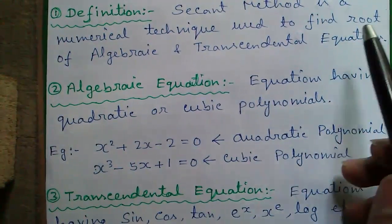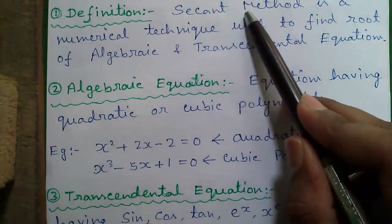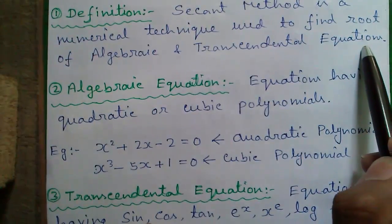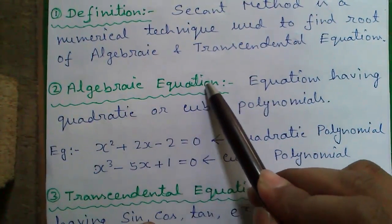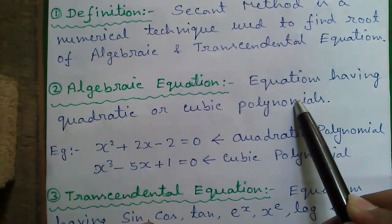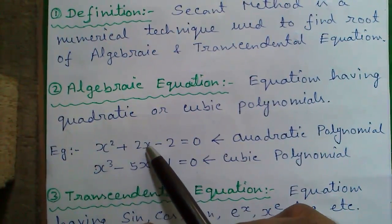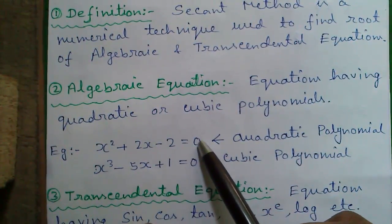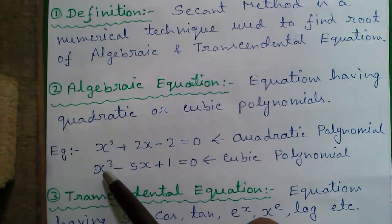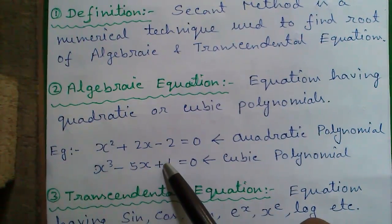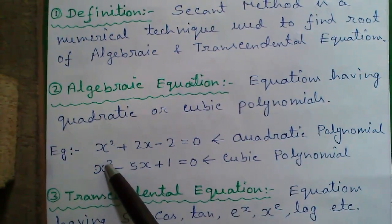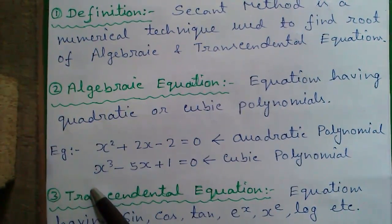So for some basics, the definition of secant method. Secant method is a numerical technique used to find root of algebraic and transcendental equations. Number two, algebraic equations. Equations having quadratic or cubic polynomials are called the algebraic equation. For example, x squared plus 2x minus 2 equals to 0 is an example of quadratic polynomial having power as 2. And next is x cubed minus 5x plus 1 equals to 0 is an example of cubic polynomial having power as 3. I solved this question in my previous video by secant method.